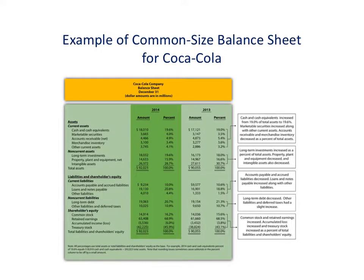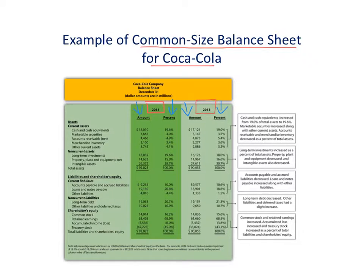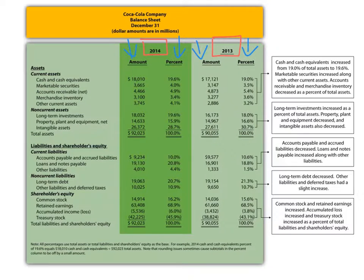Now let's take a look at the balance sheet. This is the common-size analysis for the balance sheet for Coca-Cola, looking at two years — 2014 and 2013. We see the dollar amounts, which is what we'd typically see in the financial statements, and we also see the percent columns, which give each line item as a percent of total assets. Let's go through one example — the cash and cash equivalents line.